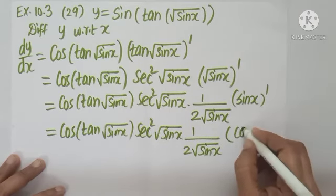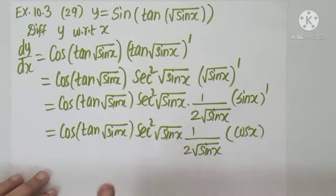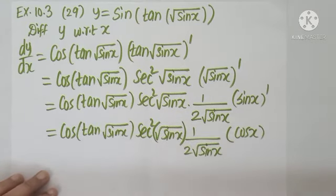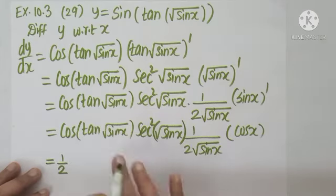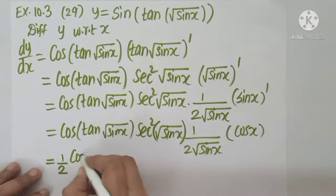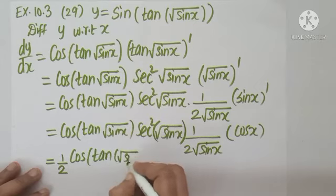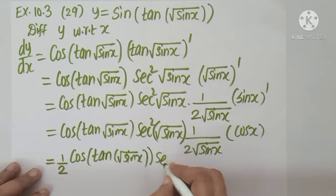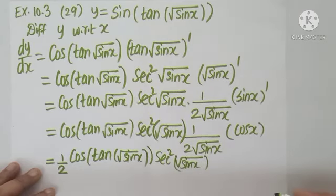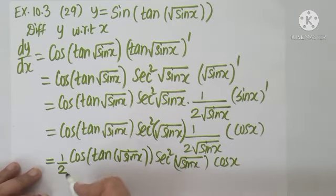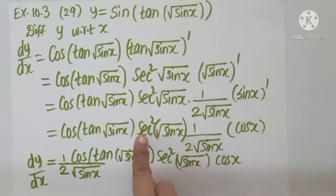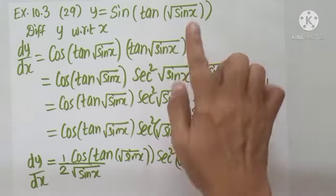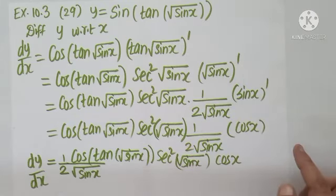The derivative of sin x is cos x. So the final answer is dy/dx = (1/2)·cos(tan(√(sin x)))·sec²(√(sin x))·(1/(2√(sin x)))·cos x. To summarize: sin becomes cos, tan becomes sec², root becomes 1/(2√·), sin x becomes cos x — bring 1/2 to the beginning and copy the rest.